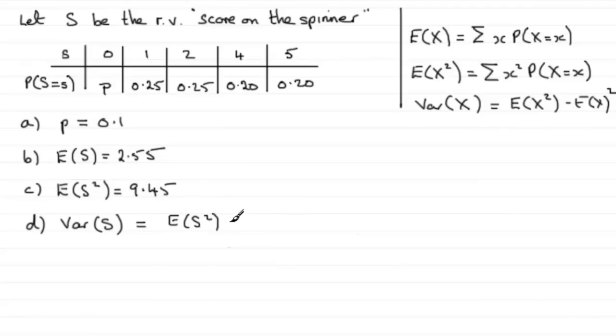So we have E(S²), which we found earlier in part C, equals 9.45. We just need to subtract E(S) all squared, which is 2.55 squared. Work that out and what you end up with is 2.9475.